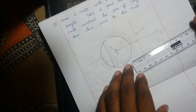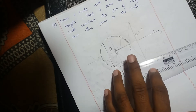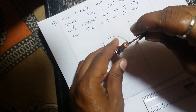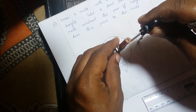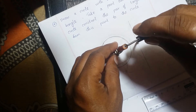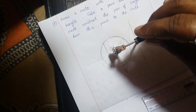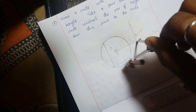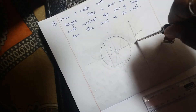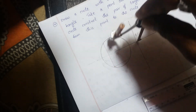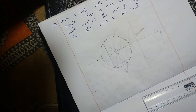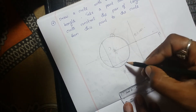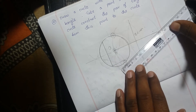This intersection point is the midpoint of OP. With this midpoint as the center, see the distance up to the center O and draw a circle. The new circle is touching the original circle at two places.